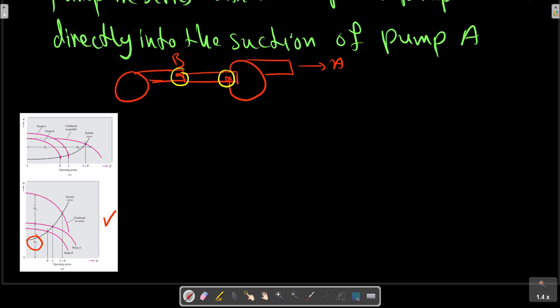The resulting curve adds two heads at the same Q. The resulting curve, also shown in this diagram, is the combined series curve, adding two heads.